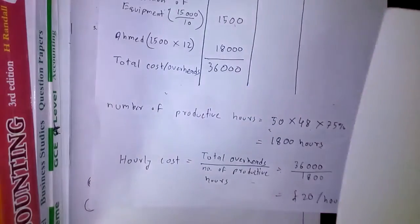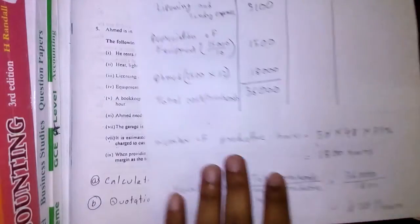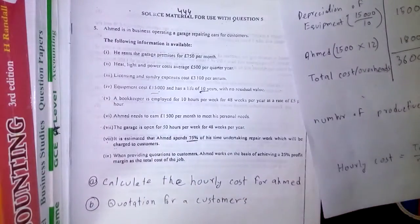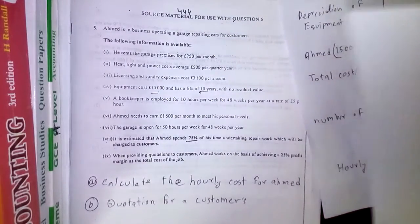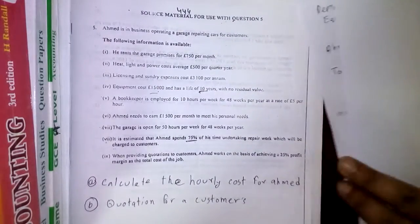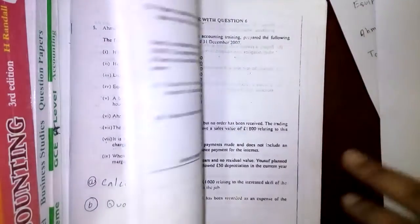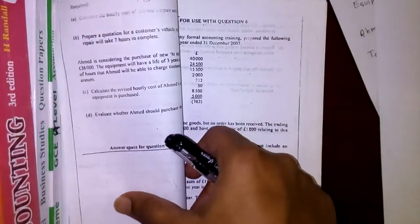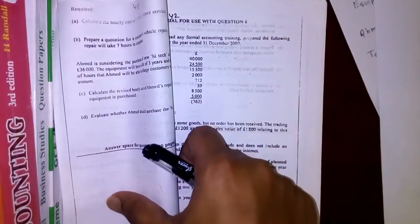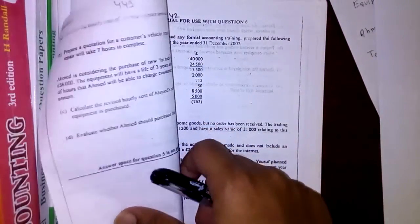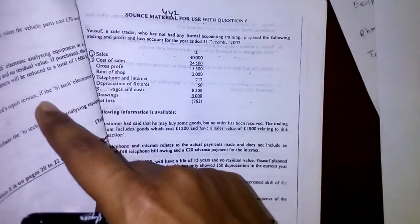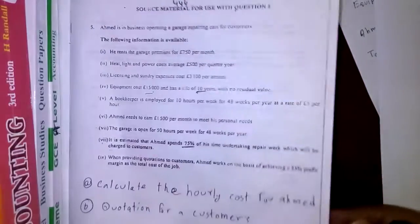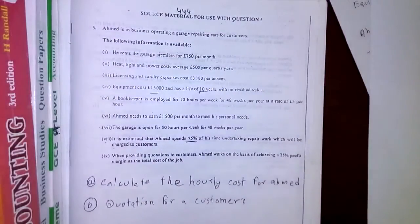Next we're going to do part b, where they ask for a quotation for a customer. If you turn the page you'll see that the vehicle parts will be £70 and other things will be detailed there.